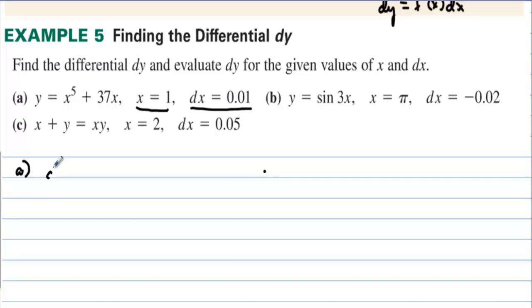So, on letter a, dy dx is equal to 5x to the fourth plus 37. Now, we will evaluate this. Well, let's separate it first. So, let's multiply both sides by dx.